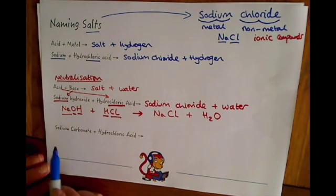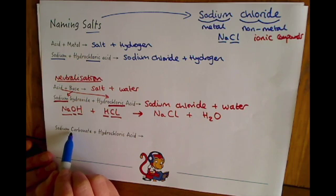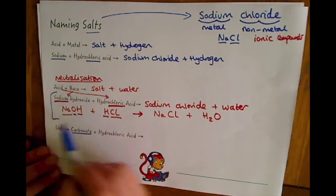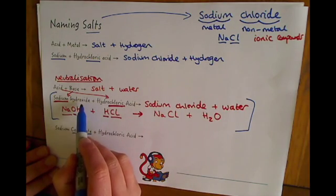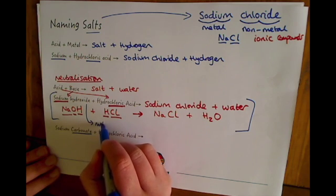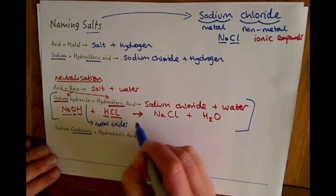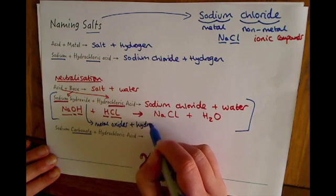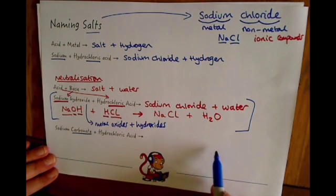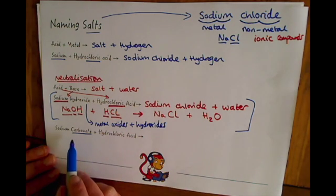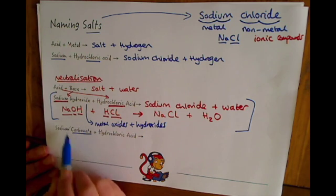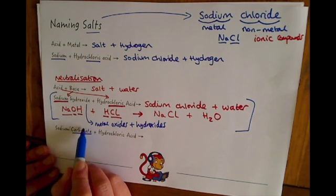I want to bring in now a special case of neutralisation, whereby you have a carbonate. This works for metal oxides and hydroxides. But if we've got something called a metal carbonate, the products that we make are slightly different. Now what I want you to get into the habit of is looking at that word carbon in the carbonate.